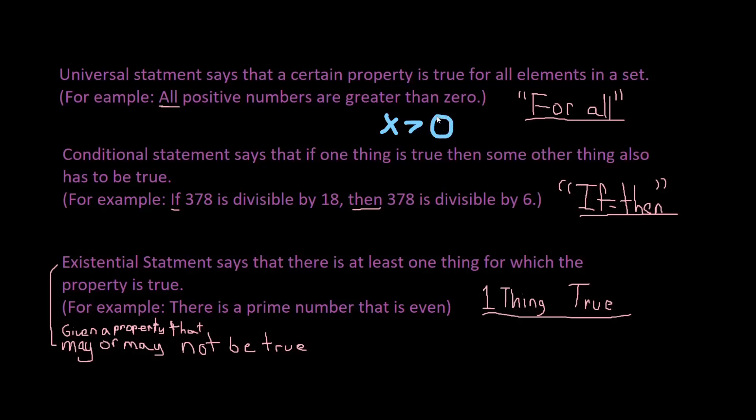In this case our certain property is all positive numbers are greater than zero and our given set and elements are any number greater than zero.